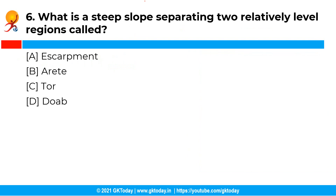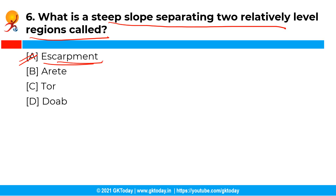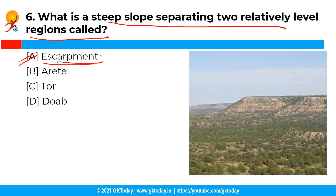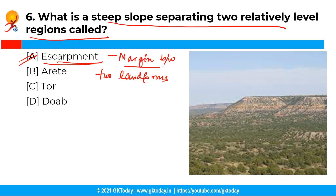The next question is: What is a steep slope separating two relatively level regions called? The correct answer is option A, that is escarpment. Escarpment is a steep slope or cliff separating two relatively level regions, and it refers to the margin between the two landforms.